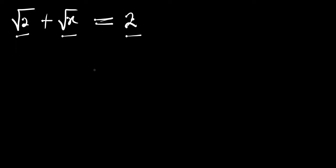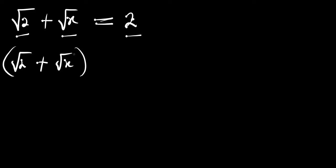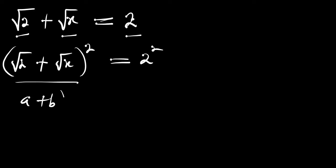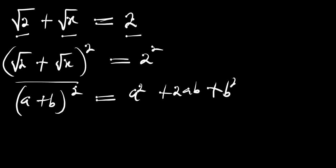What we can do is take the squares of both parts of this equation. We have (root of 2 plus root of x) raised to the power of 2 equals 2 raised to the power of 2. We can liken this to the form of (a + b)² which equals a² plus 2ab plus b².